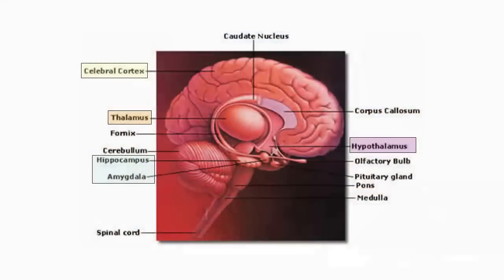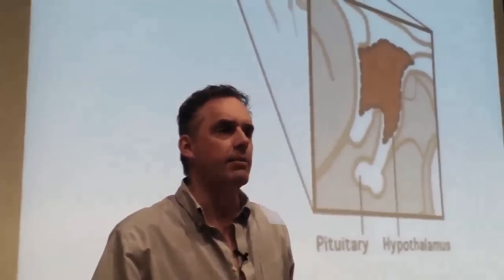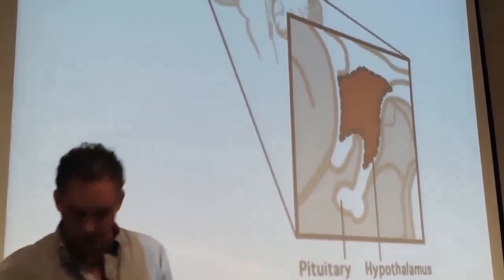The hippocampus is responsible for the movement of short-term information into long-term storage — a very important part of the brain we'll talk about more next time. The amygdala is responsible for a lot of emotional responses. And the hypothalamus is responsible for a lot of primordial motivational states. We'll stop here and start with the hypothalamus on Tuesday. See you soon.